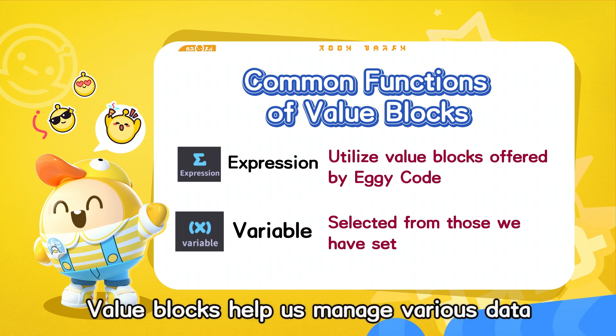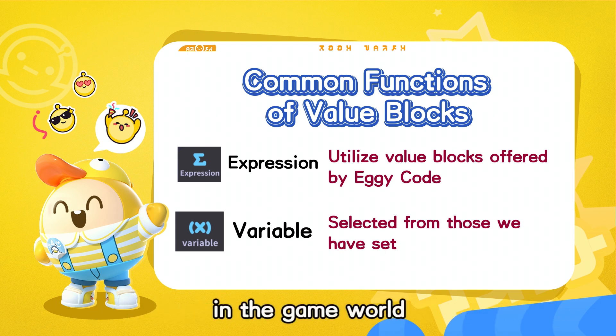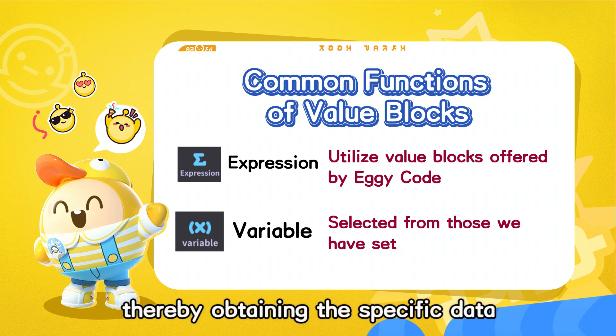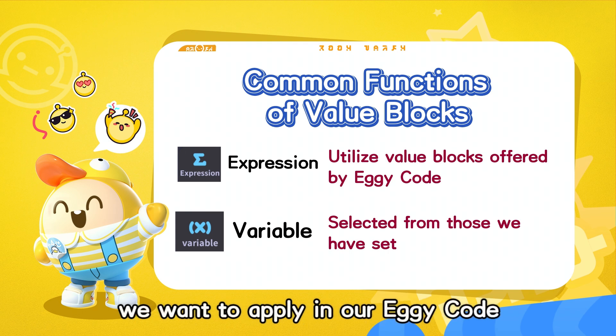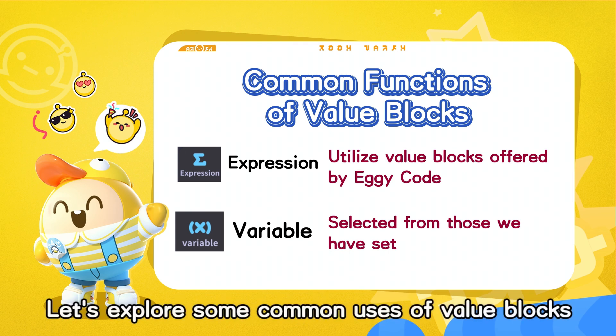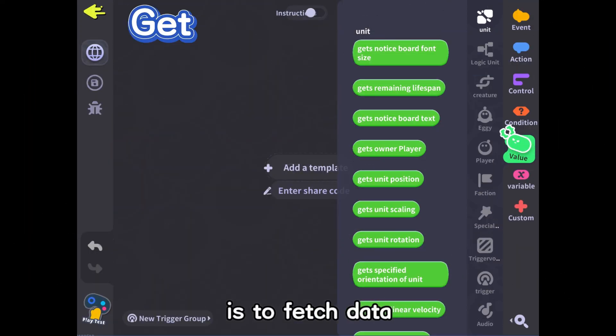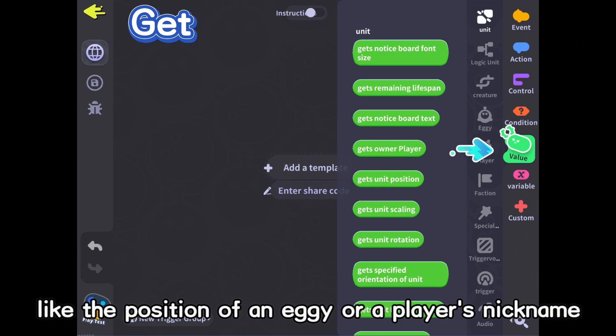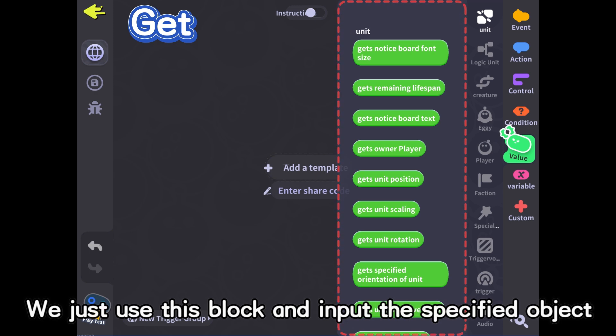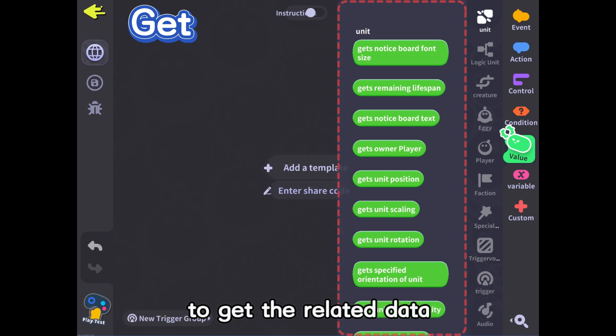Value blocks help us manage various data in the game world, thereby obtaining the specific data we want to apply in our Eggie code. Let's explore some common uses of value blocks. The most common use of value blocks is to fetch data, like the position of an Eggie or a player's nickname. We just use this block and input the specified object to get the related data.